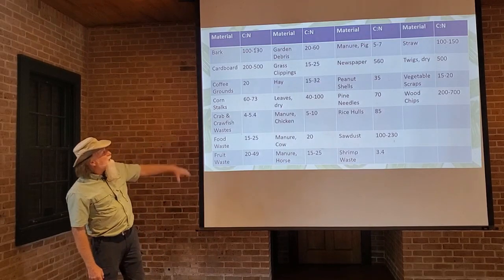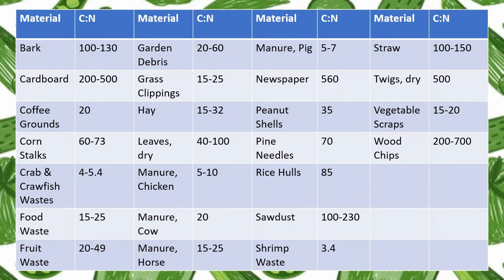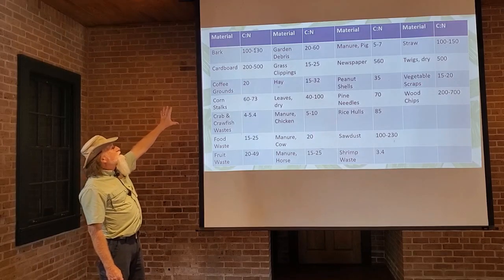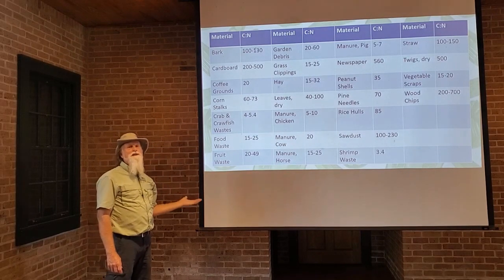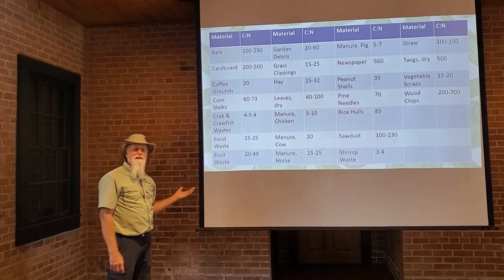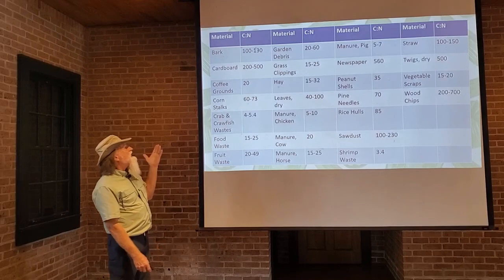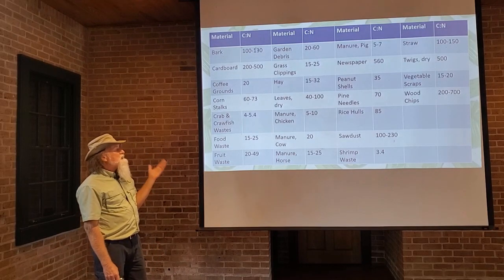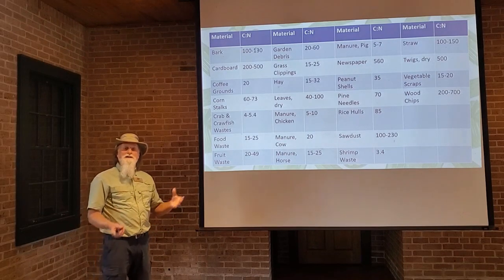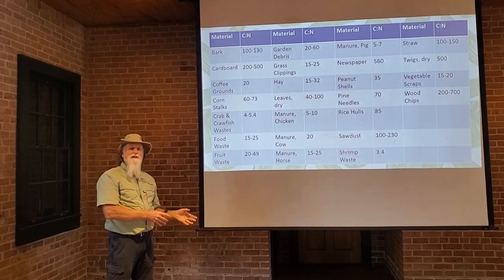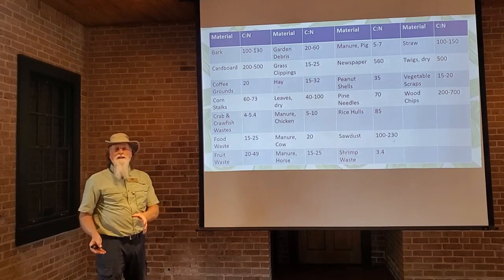Here is a table so you can get some idea of the carbon-nitrogen ratio of things that you would put in your compost pile. Some things have a very high carbon-nitrogen ratio — those are what we term browns. Some other things have a much lower carbon-nitrogen ratio — those would be what we consider greens. When we talk about browns and greens, browns have a high CN ratio, greens have a lower CN ratio.